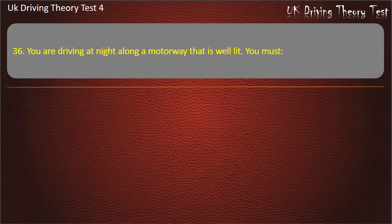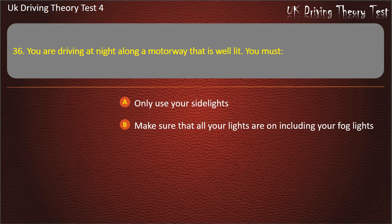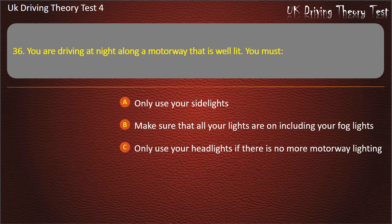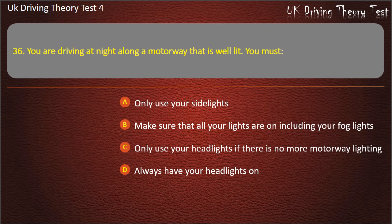Question 36. You are driving at night along a motorway that is well lit. You must: only use your side lights; make sure all lights are on including fog lights; only use headlights if there is no motorway lighting; or always have your headlights on. Answer: Always have your headlights on.